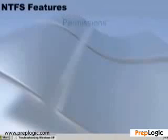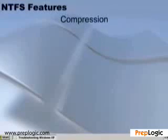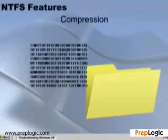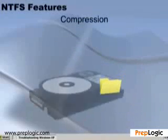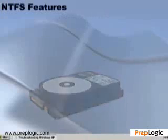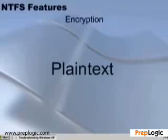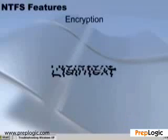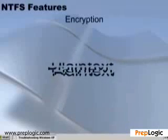We also have a feature called compression. Compression allows us to take a data file and cause it to take up less space on the hard drive using techniques that store the data in a smaller footprint in the drive space. We can also use encryption. Encryption allows us to take data in a readable format and convert it to a non-readable format in such a way that we can convert it back to the readable format.